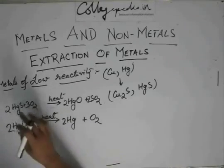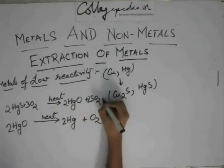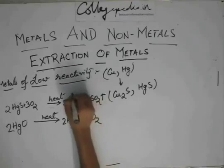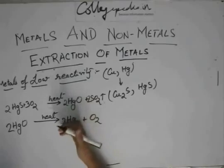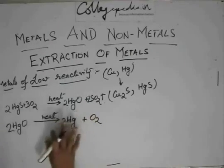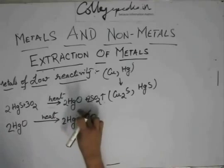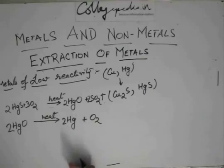First you heat it with oxygen and you will get sulfur dioxide gas and the oxide. Now generally the oxide is easier. It is easier to obtain the metal from the oxide rather than sulphides. We first convert it to the oxide and then the oxide is heated again to give Hg.